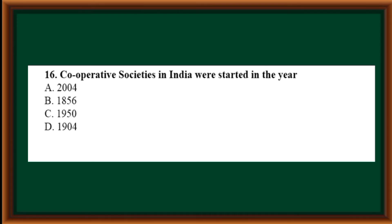Cooperative societies in India were started in the year: options are 2004, 1856, 1950, 1904. Correct answer: 1904.